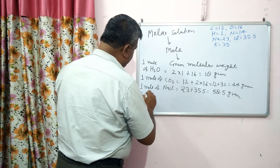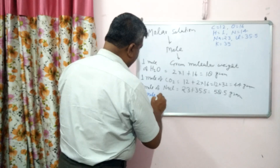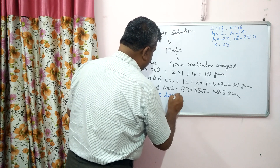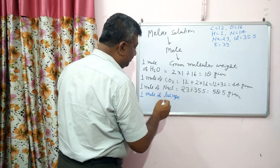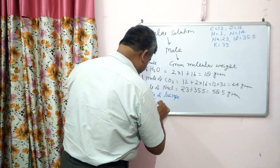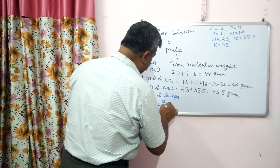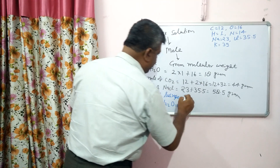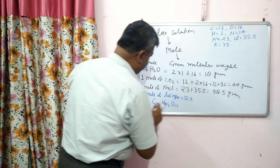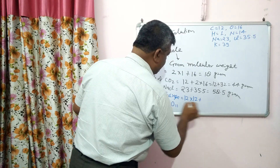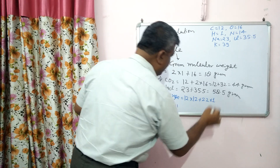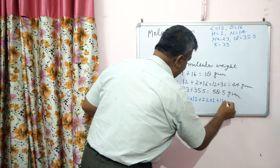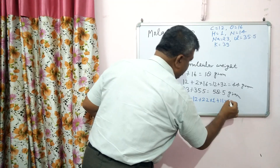Similarly, 1 mole of sucrose — this is asked in examinations. Sucrose, that is table sugar, has the formula C₁₂H₂₂O₁₁. So it has 12 atoms of carbon: 12 × 12 = 144, plus 22 atoms of hydrogen with weight 1 each = 22, plus 11 atoms of oxygen with atomic weight 16 each.